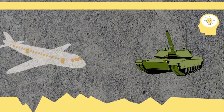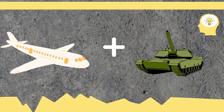And now for the million dollar question: what if airplanes had landing gears made from tank wheels? Well, it really happened. In the 1950s, the American Air Force experimented with tank-style wheels. Imagine a plane with tank wheels — that would be so awesome.